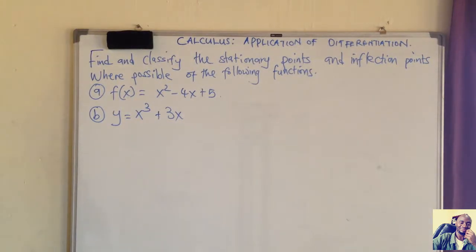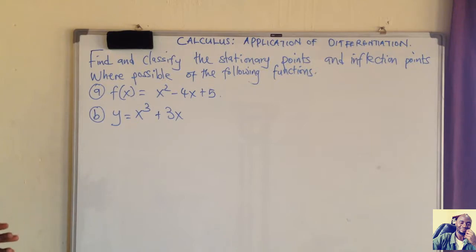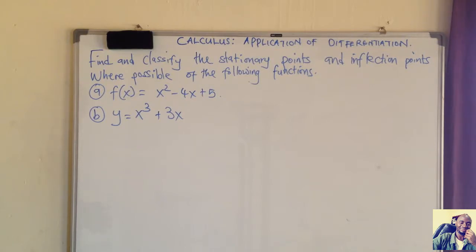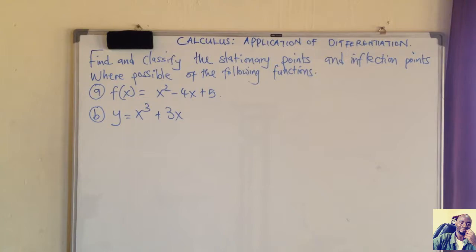Welcome. In this video we want to see how we can apply differentiation to find and classify stationary points and inflection points where possible for the following functions. When you are told to find stationary points, the first thing you have to know is that stationary points occur where the derivative or gradient function is equal to zero. When the gradient is equal to zero, that's when we have what we call stationary points or inflection points — sometimes called critical points.